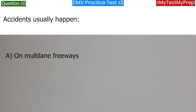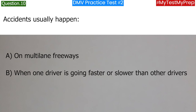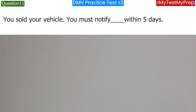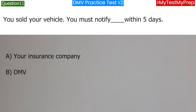Accidents usually happen: a. On multi-lane freeways; b. When one driver is going faster or slower than other drivers; c. On bridges and overpasses. Answer: a. On multi-lane freeways.